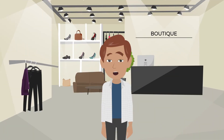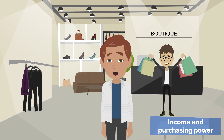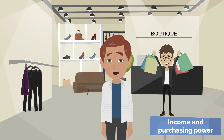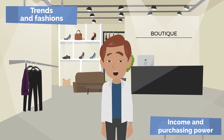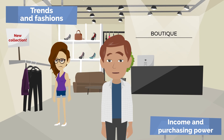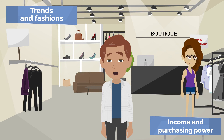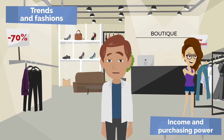What else, apart from price, affects how high the demand is? First of all, the income and purchasing power of customers — the higher they are, the higher the demand for goods that consumers need. Demand for specific products can also rapidly increase or decrease under the influence of current trends and fashions. The best example of this are various clothing collections: something that was fashionable and aroused great interest six months ago can today only be sold at a discounted price of 70% or more.